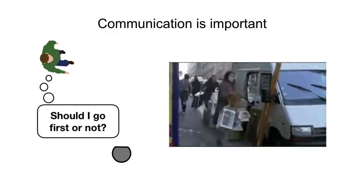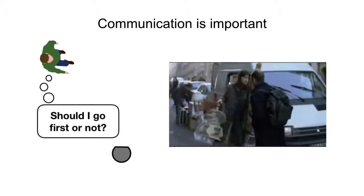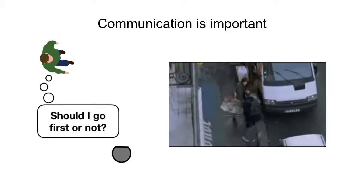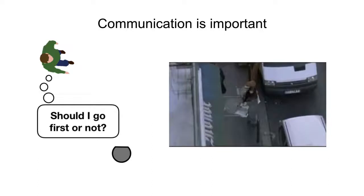Collision avoidance can be challenging even for humans, as one's intent is not necessarily obvious to another. A common strategy employed by humans in such scenarios is to communicate with each other and express their intents.